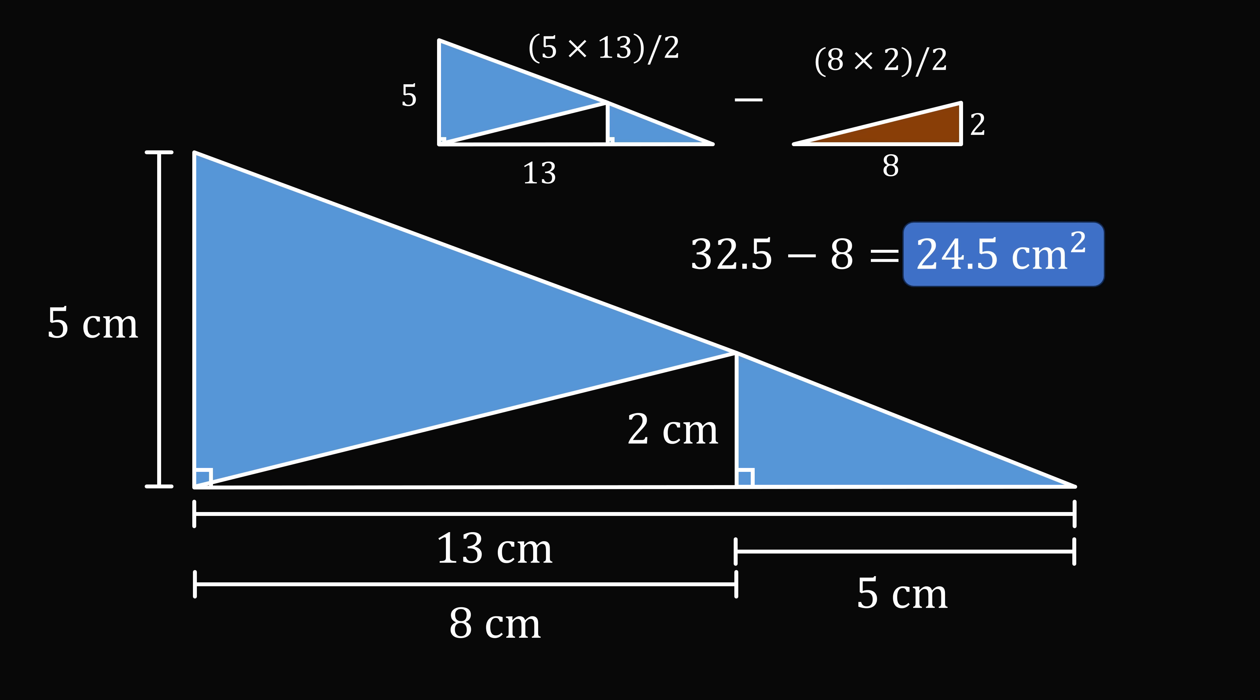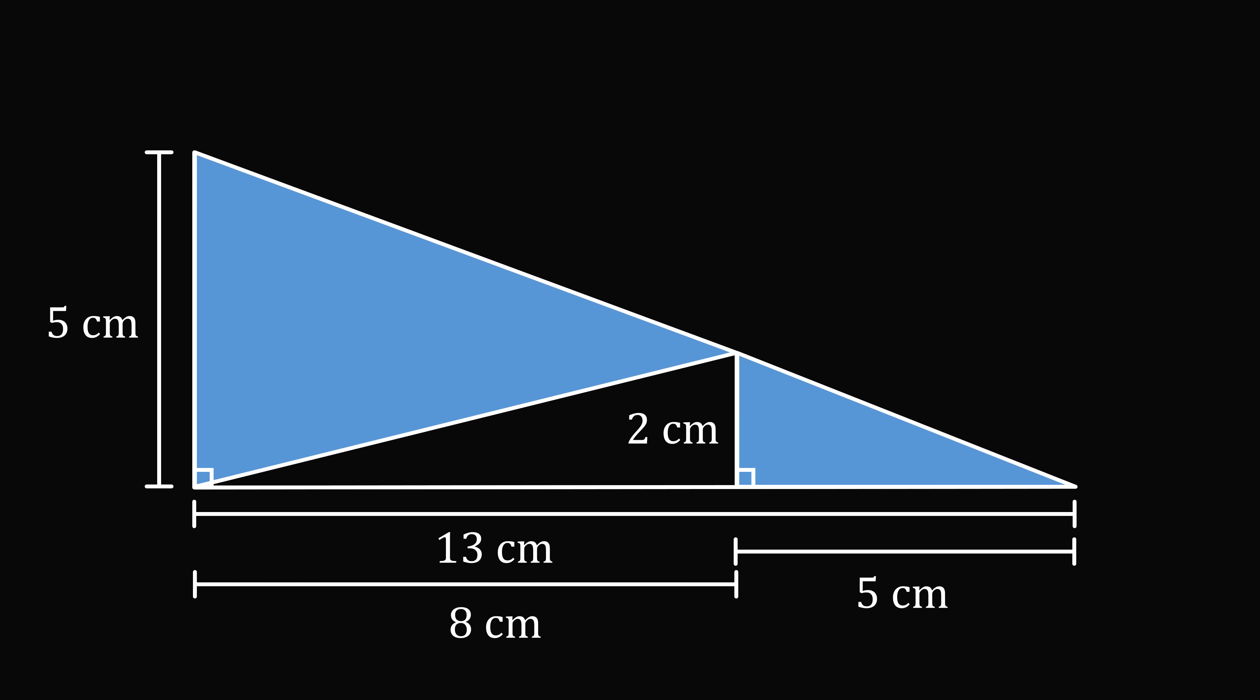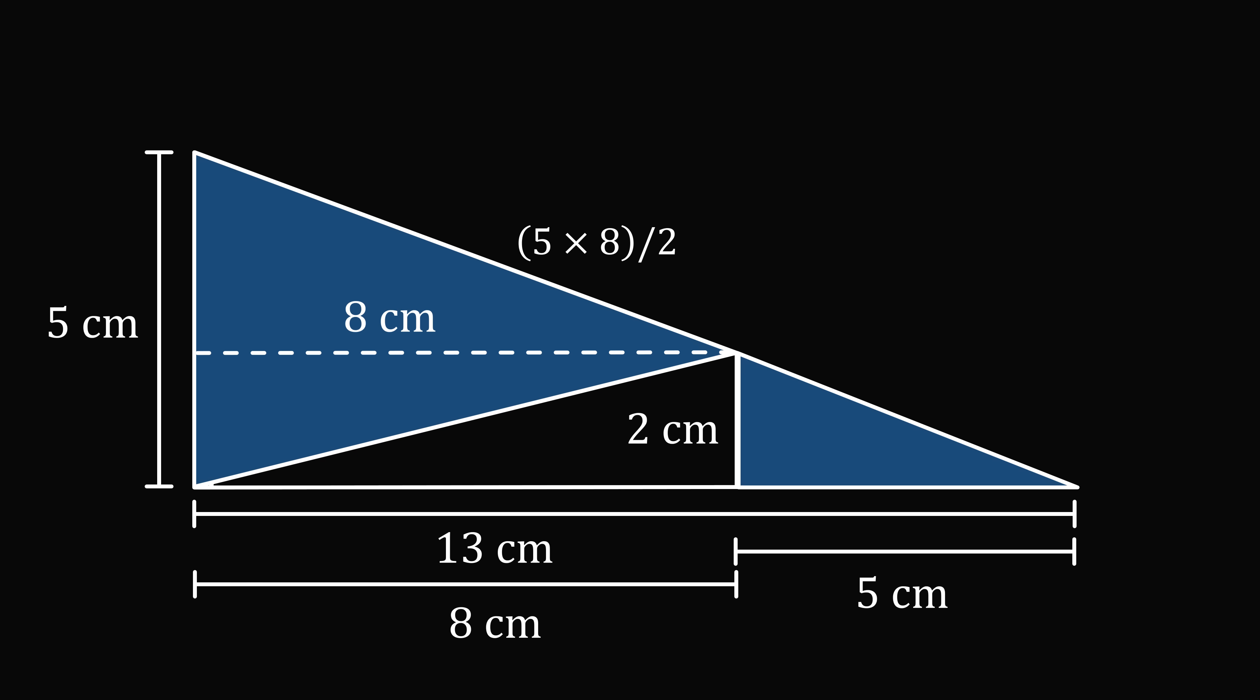But now, here's another way to solve the problem. Method 2. What if we calculated the shaded areas directly? So, this large blue triangle has a base of 5 centimeters, and its height is exactly equal to 8 centimeters. So this triangle's area will be 5 times 8 divided by 2. The other blue triangle will have an area that's 2 times 5 divided by 2. So we just need to calculate these.